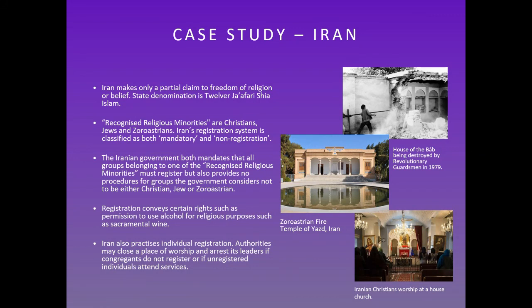In the Middle East, Iran has a state denomination of Shia Islam and recognizes three official religious minorities: Christians, Jews, and Zoroastrians. The problem is that if the Iranian government does not recognize your specific denomination as Christian, you cannot legally exist in the country. Many Protestant groups have had trouble gaining that recognition. Groups such as the Baha'i, a minority in Iran, are not allowed any legal personality and have no protections in law — which is very concerning.